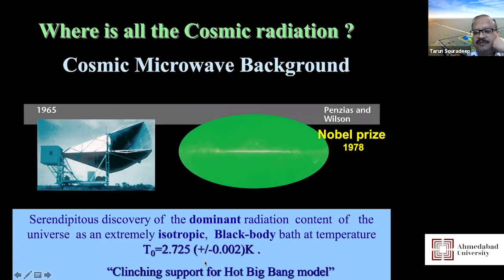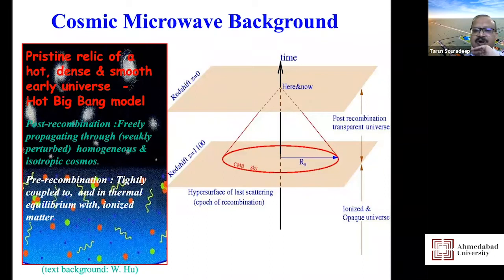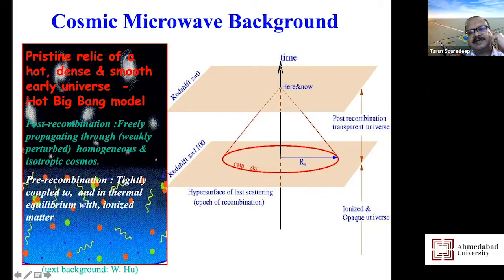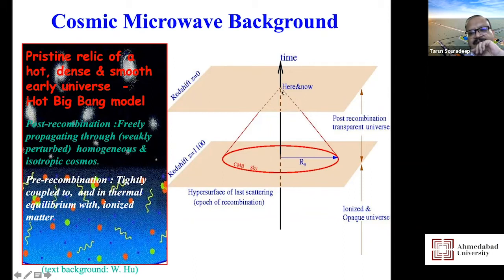The cosmic microwave background tells you the dominant radiation content of the universe is extremely isotropically distributed — to 10 parts per million you don't see fluctuations in any direction. This is the clinching support for the idea that the universe expanded from a hot, dense state to the current one. In spacetime diagrams, using conformal time and co-moving space where expansion is factored out, galaxies move on vertical lines and as I look from my position I see different distance galaxies along my backward light cone.